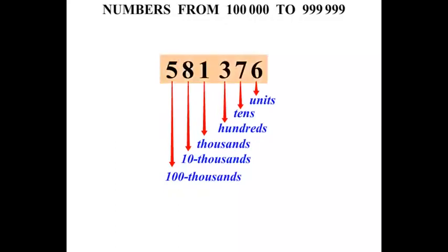Now, to read that number — there are 6 digits there, but you've only got to read 3 at a time. That first 3: 581. And then you say 1,000. There's a little gap there. 581,376.